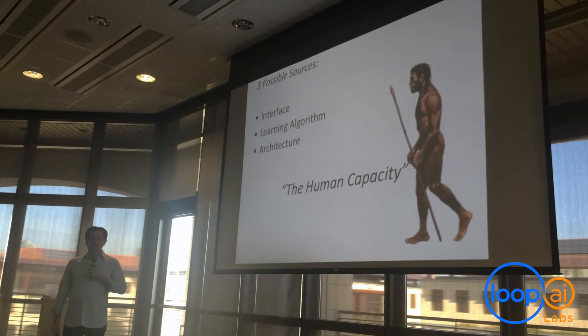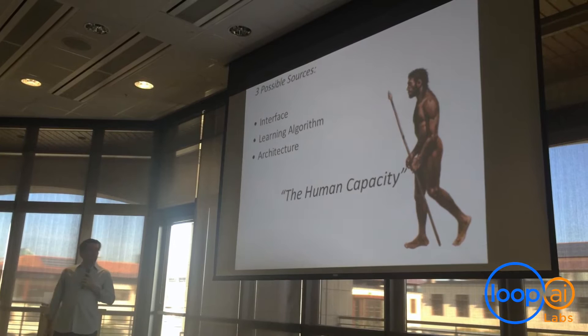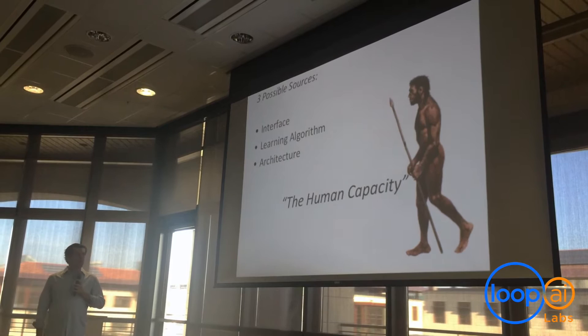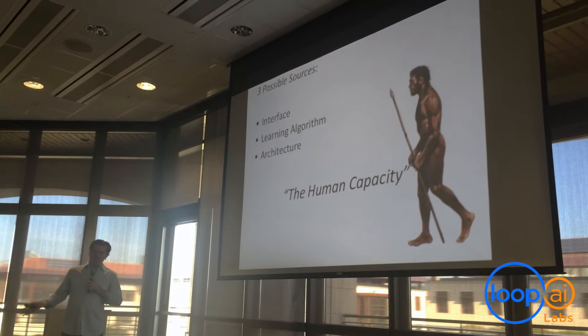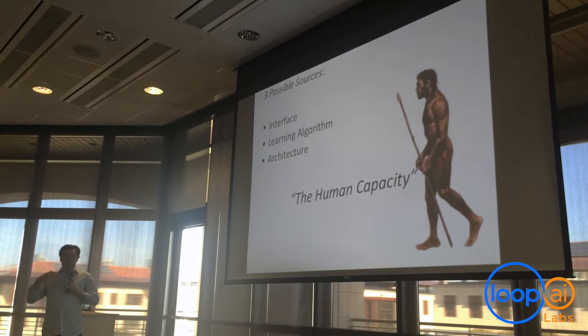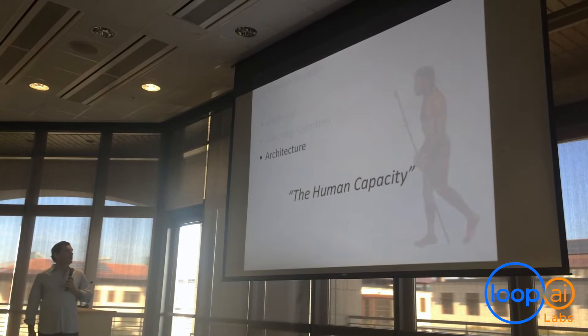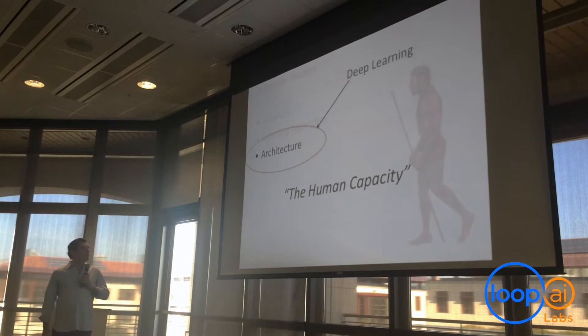As far as the interface goes, experiments show that other chimps and creatures that don't communicate the way we do are able to hear things the way we can, so the interface doesn't seem very likely. As for the learning algorithm, we know that neurons around the brain all work more or less the same way — there's a myelin sheath, potassium going in and out — and that's prevalent throughout the entire brain and also throughout species. Architecture, on the other hand, seems to be the place where we might find this human capacity.